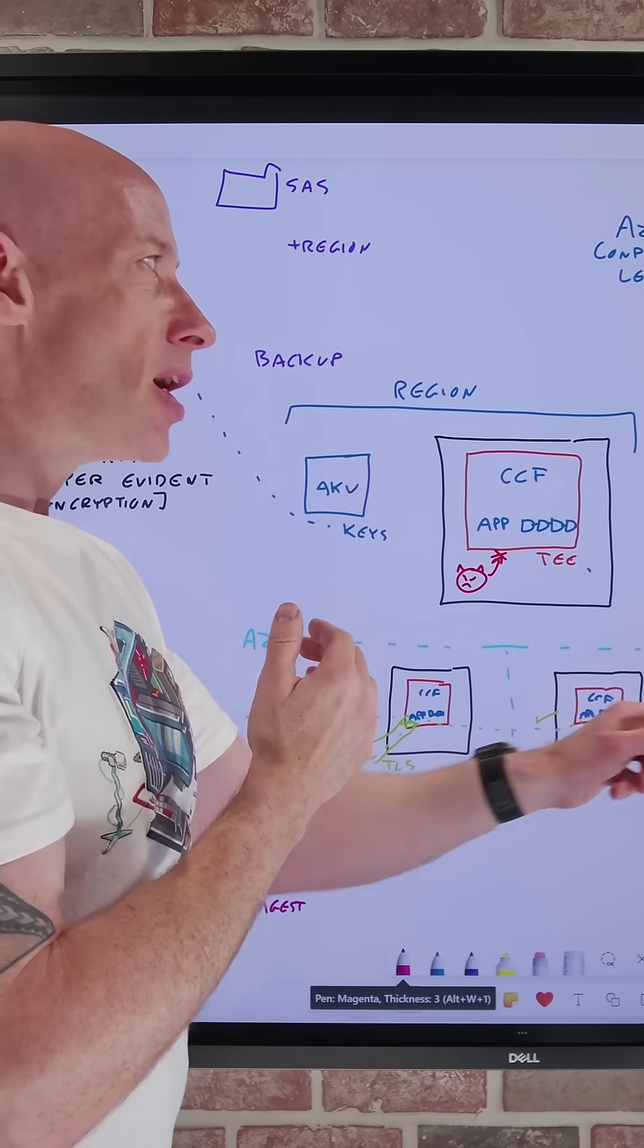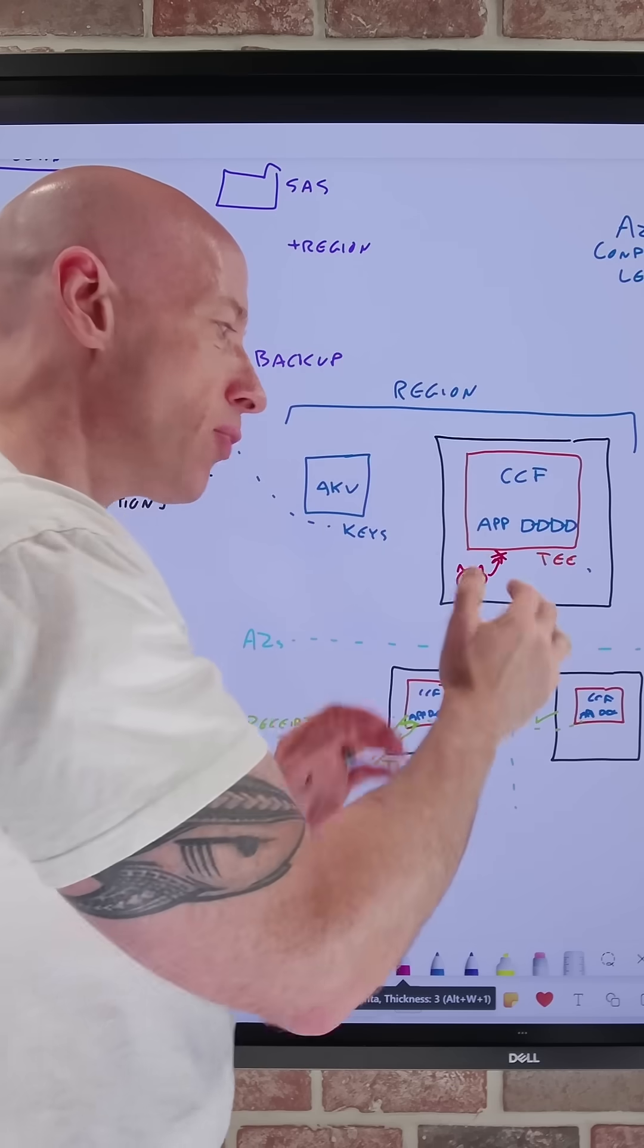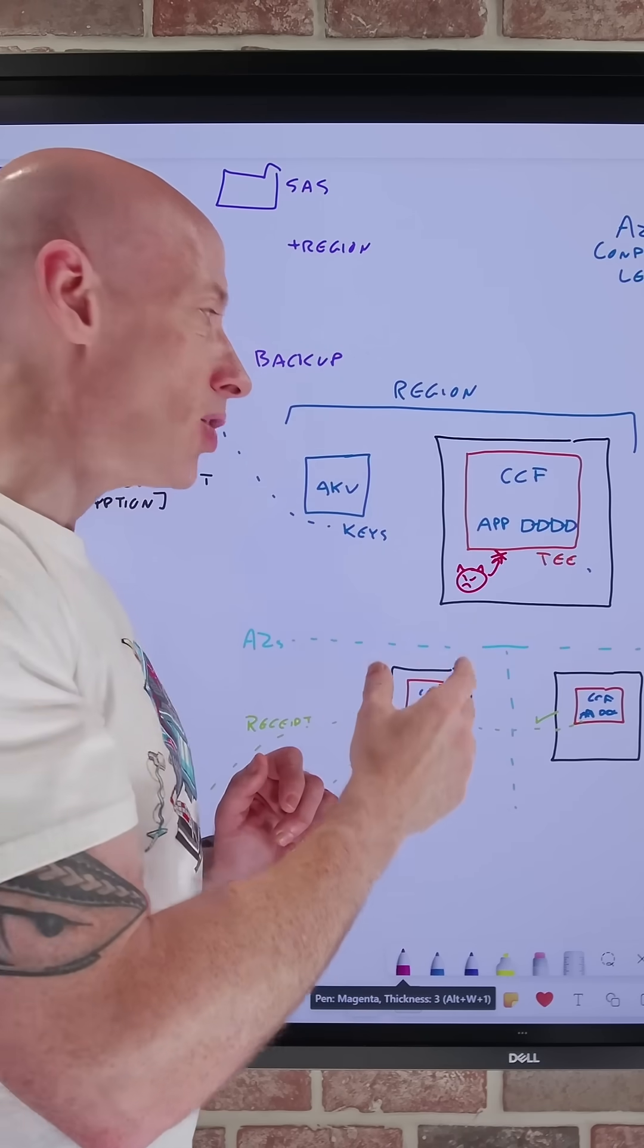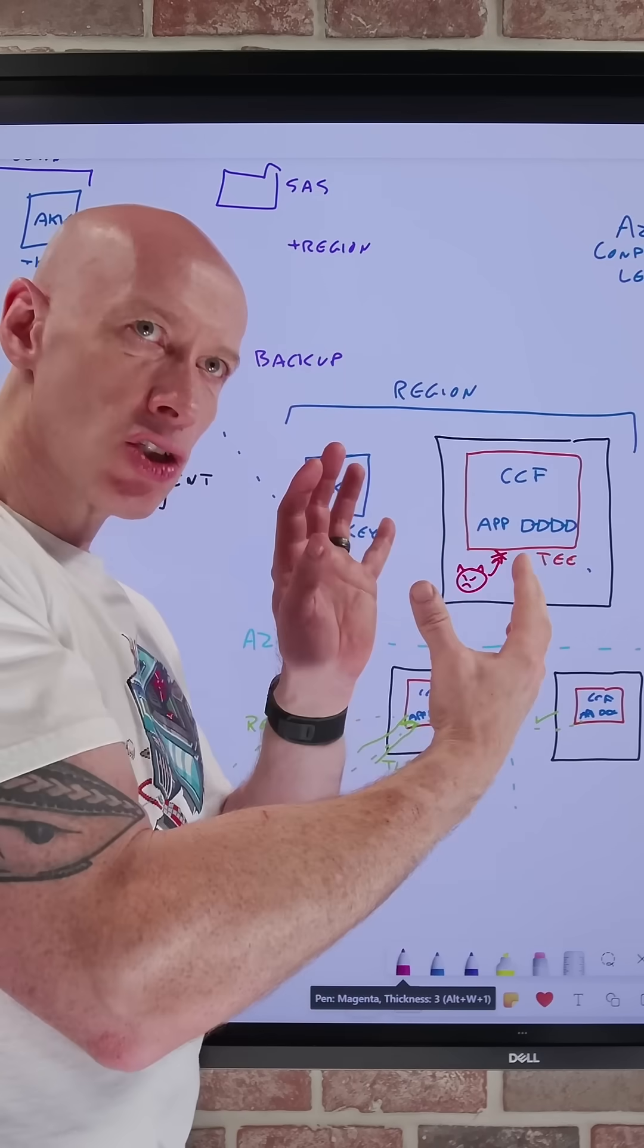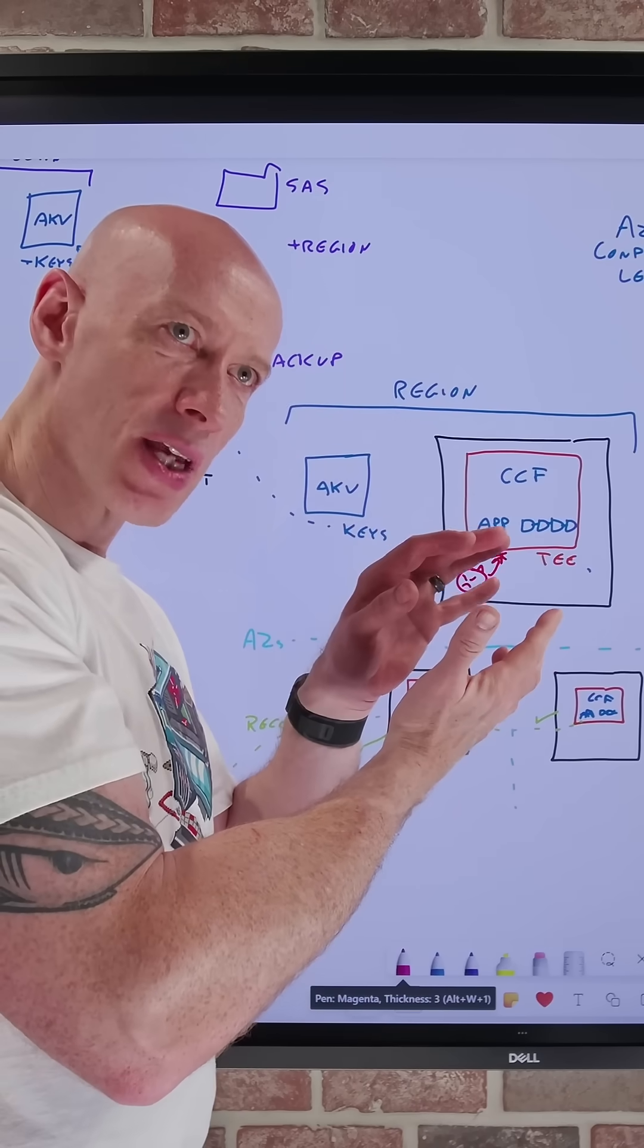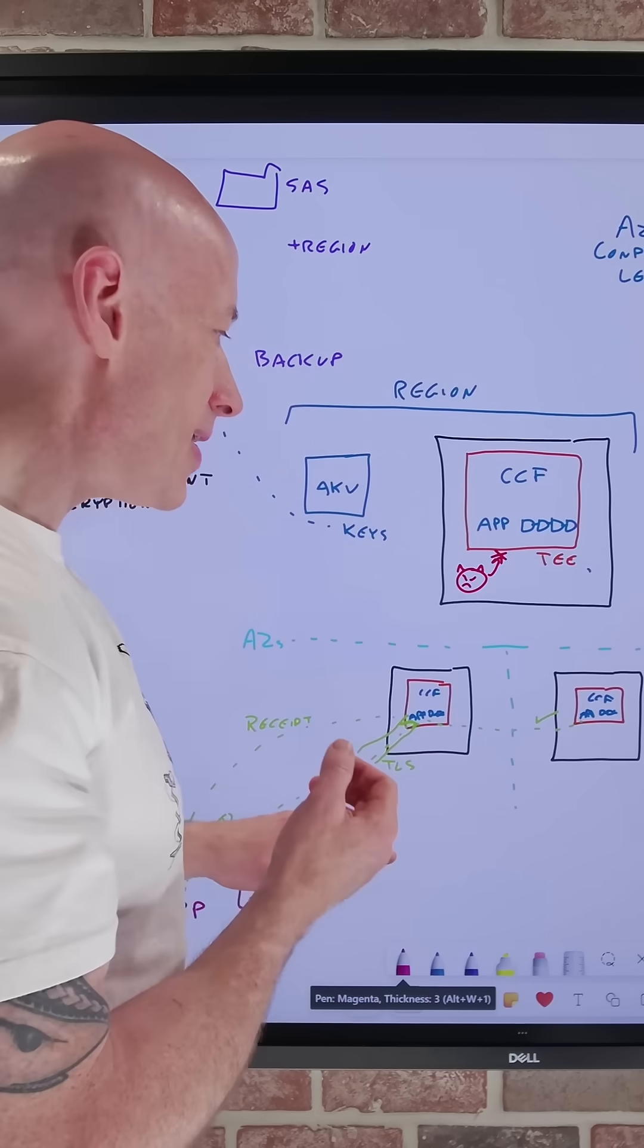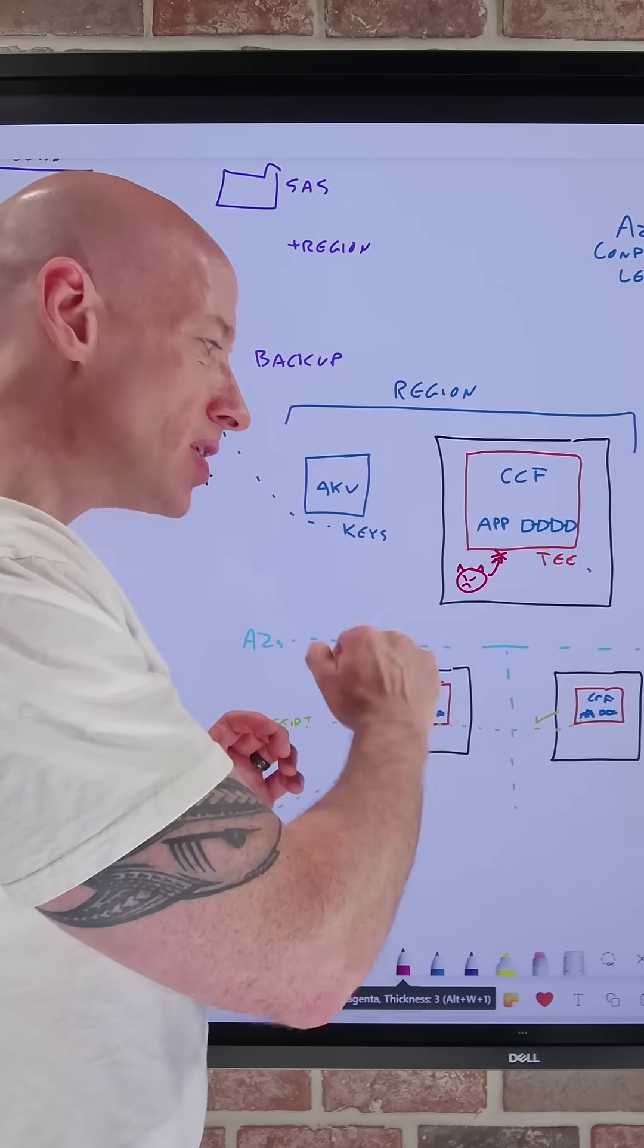And for the Azure Confidential Ledger, it is using the CCF, which is a three-node cluster, leveraging confidential compute technologies to run all of these processes in a secure component of the processor. So it's always encrypted, even in use. And that is within a certain region, uses availability zones.